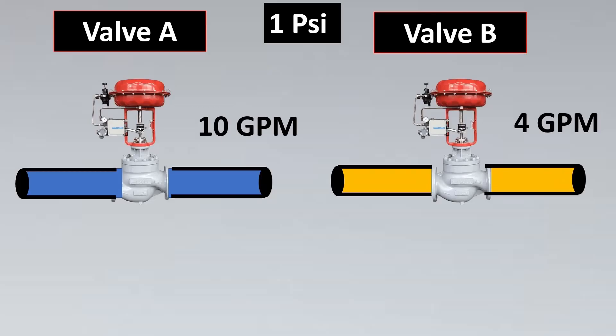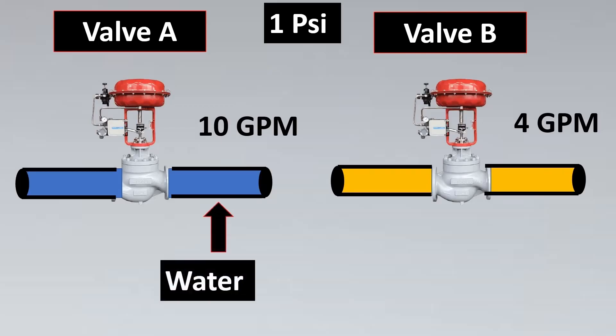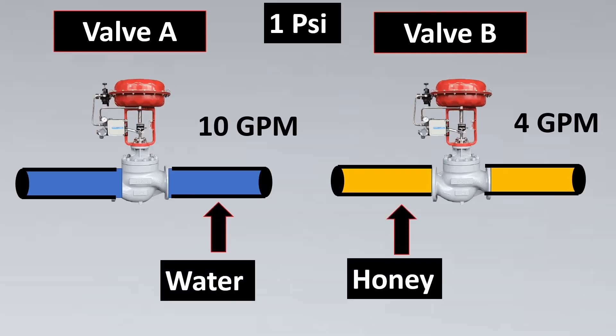There could be the case that for the first valve the fluid was water and for the other valve the fluid was honey. Honey is very dense, so it will have a lower flow rate compared to water. So even though the valves are made of the same construction, we also have to ensure that the liquid is the same if we want to compare flow capacity between two valves.